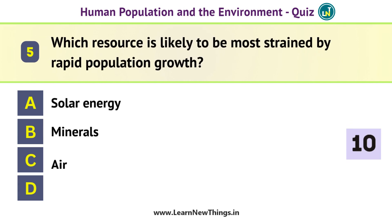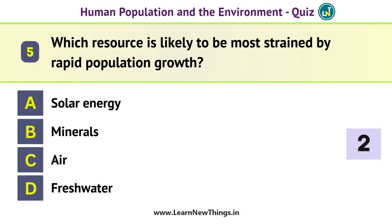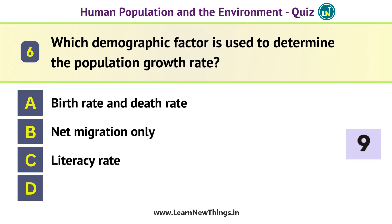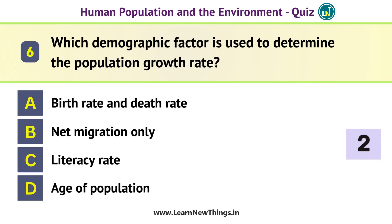Which resource is likely to be most strained by rapid population growth? Freshwater. Which demographic factor is used to determine the population growth rate? Birth rate and death rate.